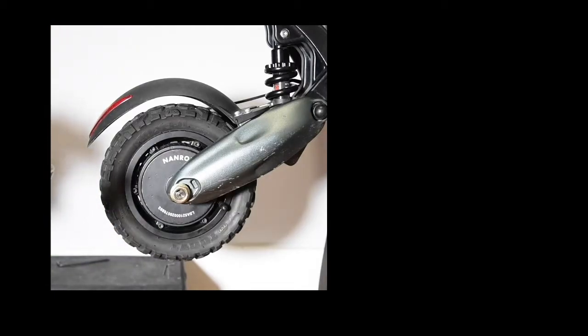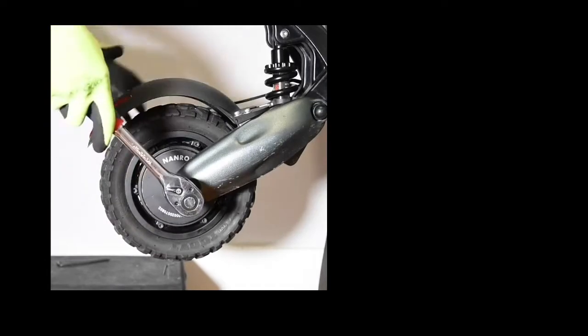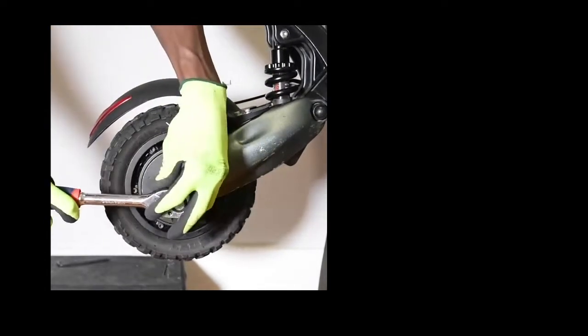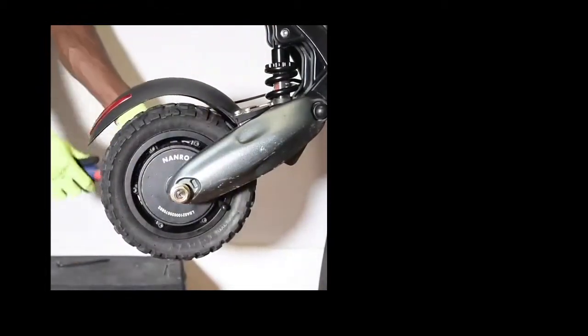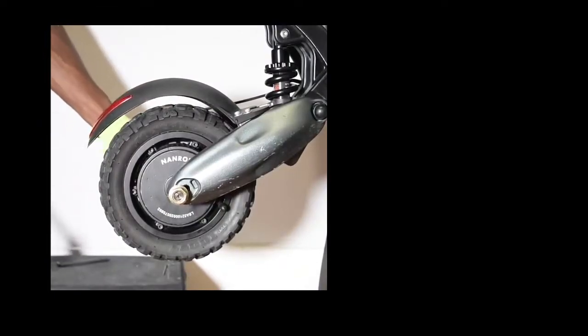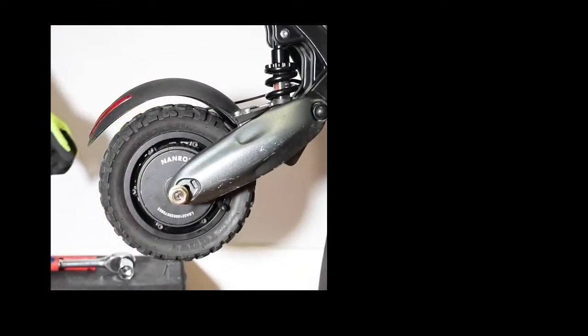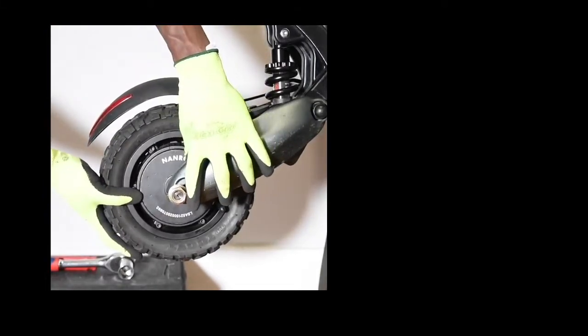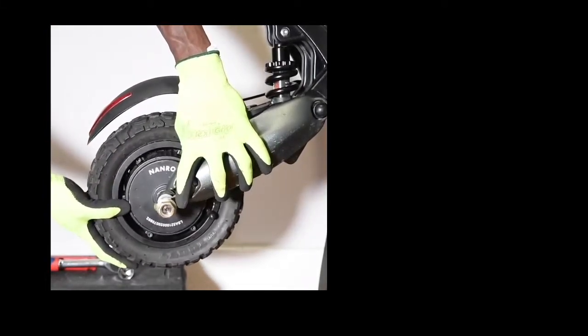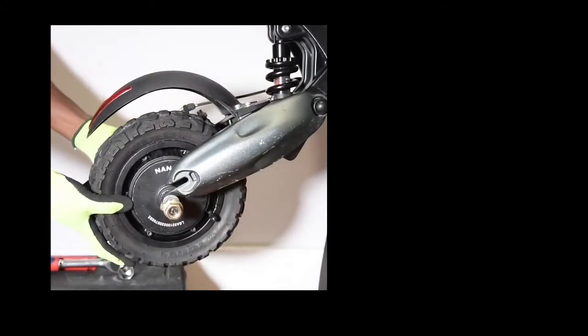Then I use my 22mm socket and take the screw off. Then you just pull off the tire and it should come out like this.